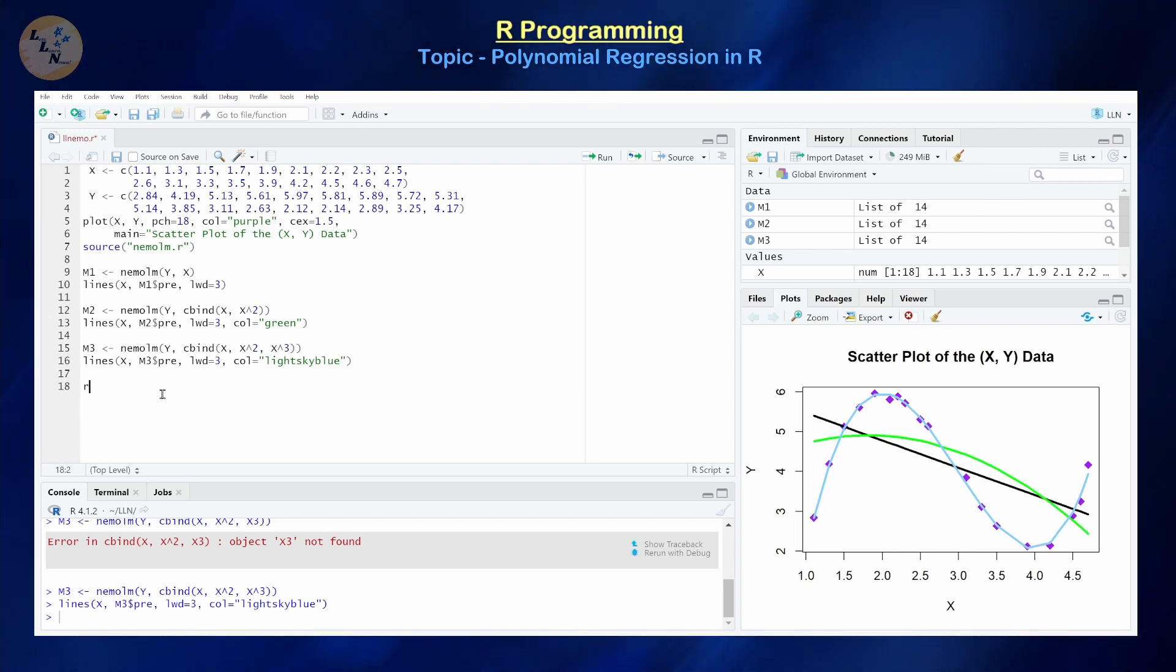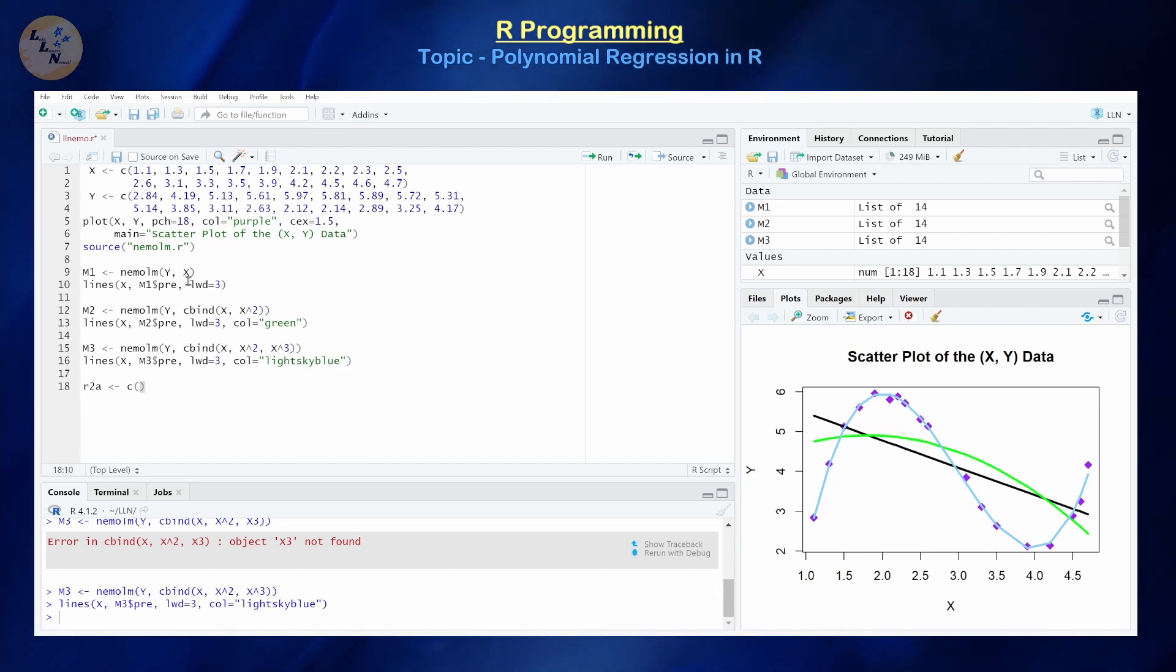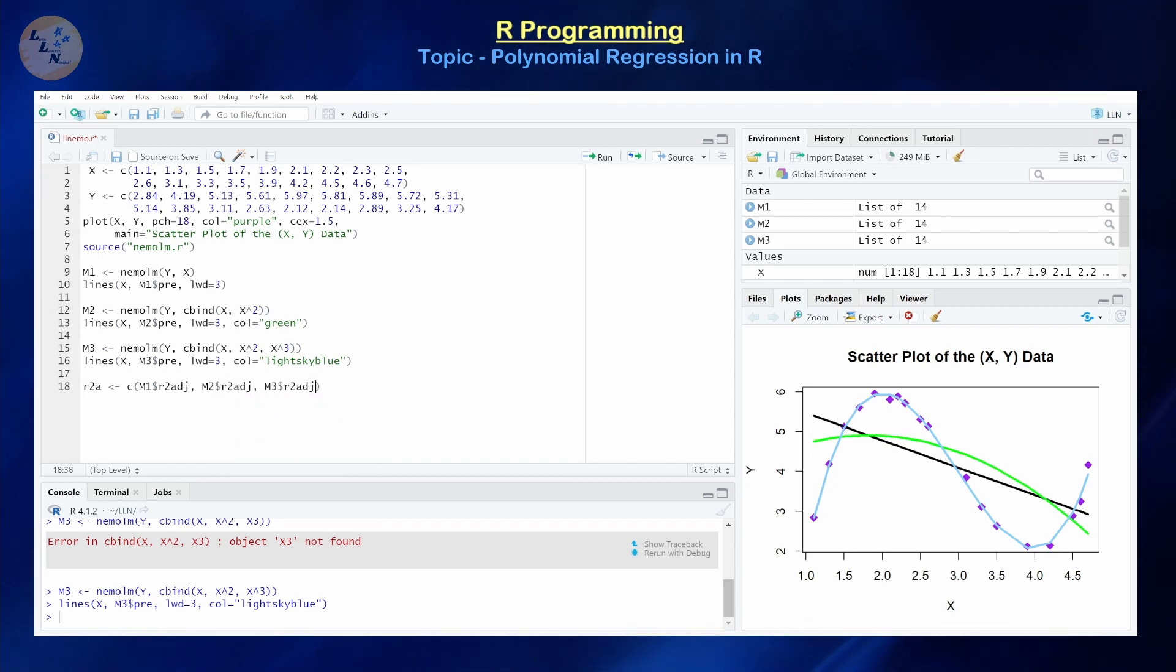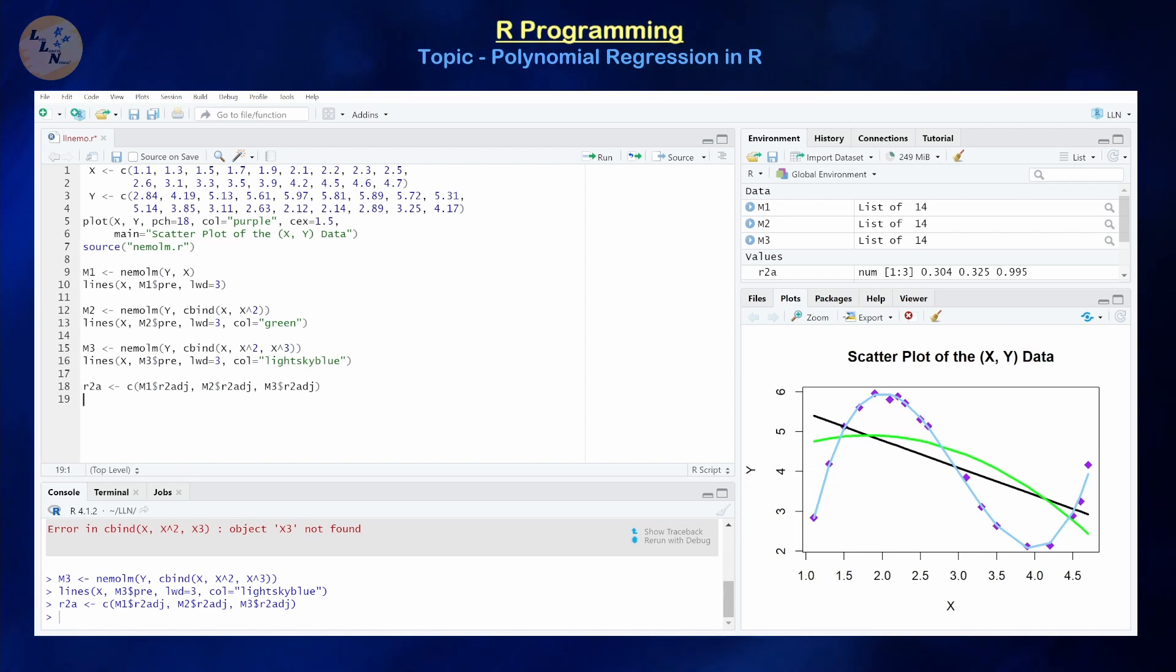Okay, so we're going to be creating a vector, let's call it r2a, which is going to consist of all of our R squared values for each of our linear, quadratic, and cubic models. So for example, the R squared value is saved at least to me in r2 adjusted, and then we're going to do m2 r2 adjusted, and then m3 r2 adjusted.